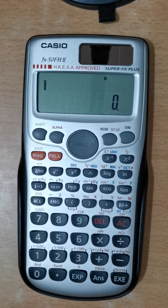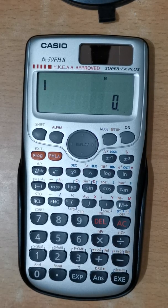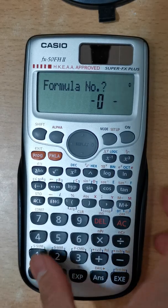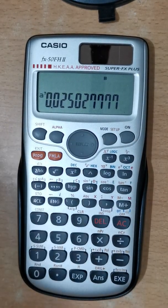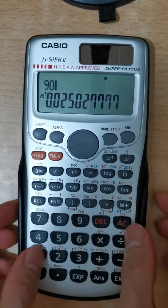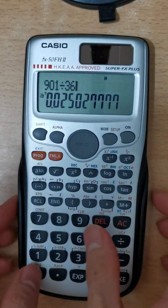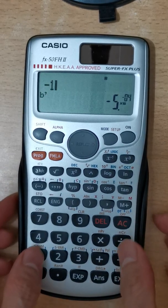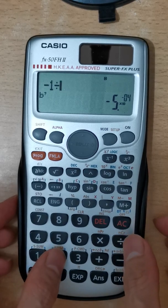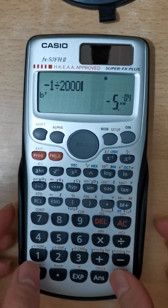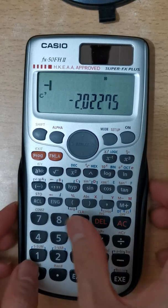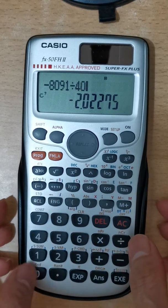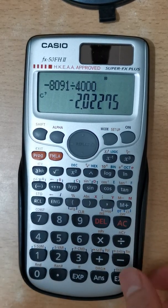To calculate a quadratic equation using the built-in formula, press Formula 0-1. Enter the coefficient of A as 901 over 36,000, the coefficient of B as negative 1 over 2,000, and the coefficient of C as negative 8,091 over 4,000. Then press EXE when you finish entering all the coefficients.